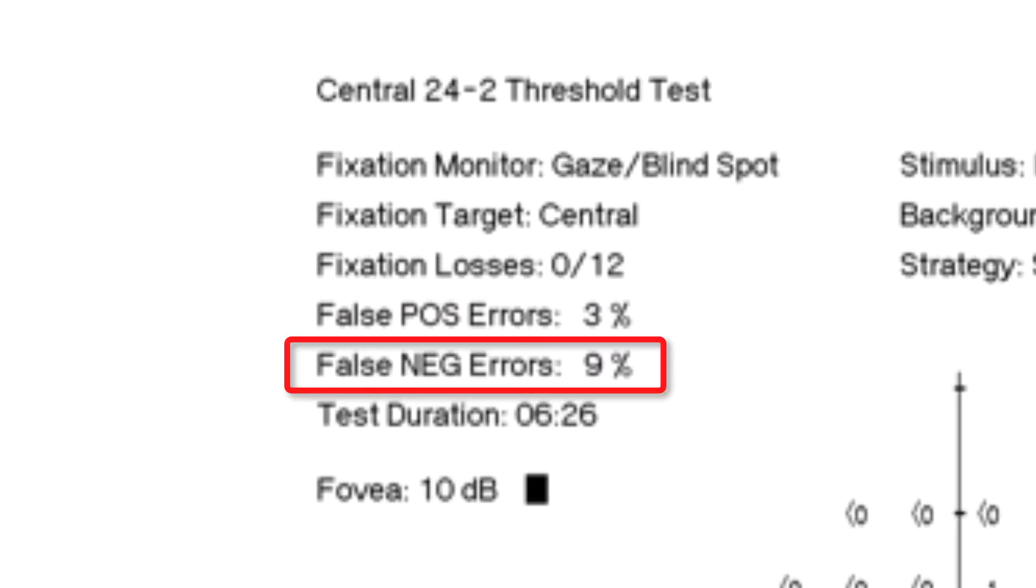Finally, check out false negative errors. They measure how often the patient failed to signal awareness of the stimulus when it was shown above a previously established luminance threshold. This is also a measure of consistency in responses, but when the visual field is full of defects, expect this percentage to be high because the patient's task is difficult. Even so, false negative errors should not exceed 40%.